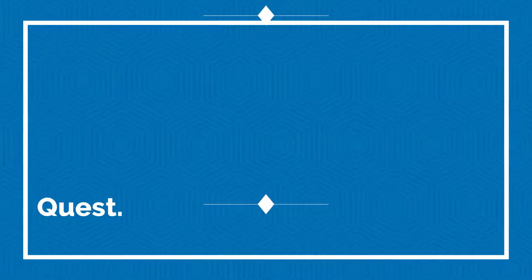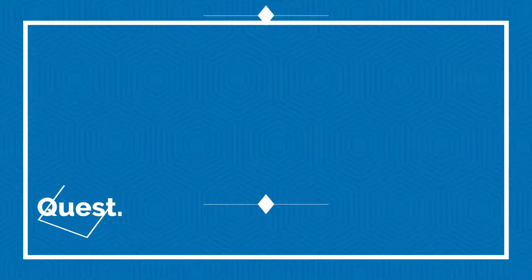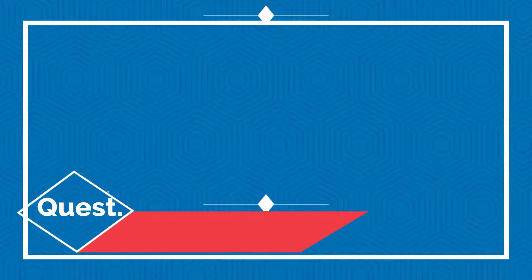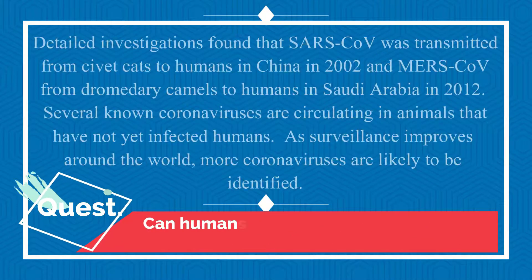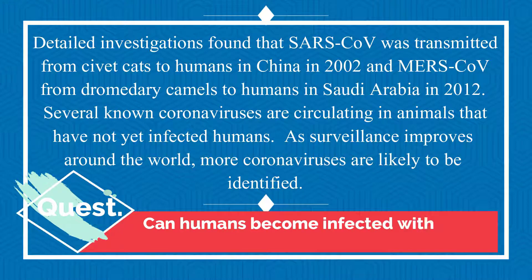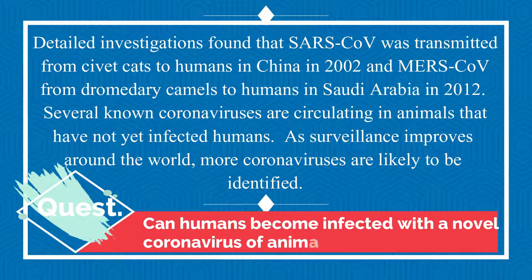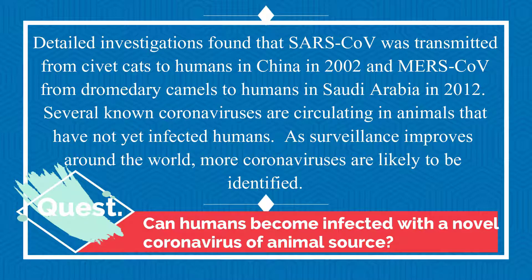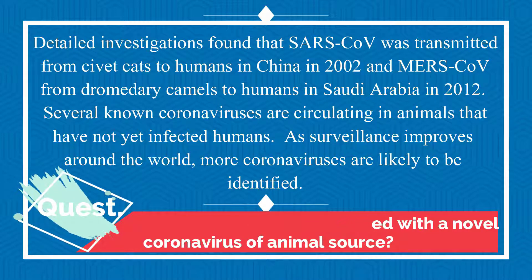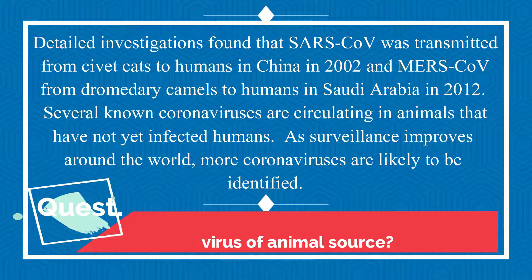Can humans become infected with a novel coronavirus of animal source? Yes — detail investigations found that SARS coronavirus was transmitted from civet cats to humans in China in 2002, and MERS coronavirus from dromedary camels to humans in Saudi Arabia in 2012. Several known coronaviruses are circulating in animals that have not yet infected humans.